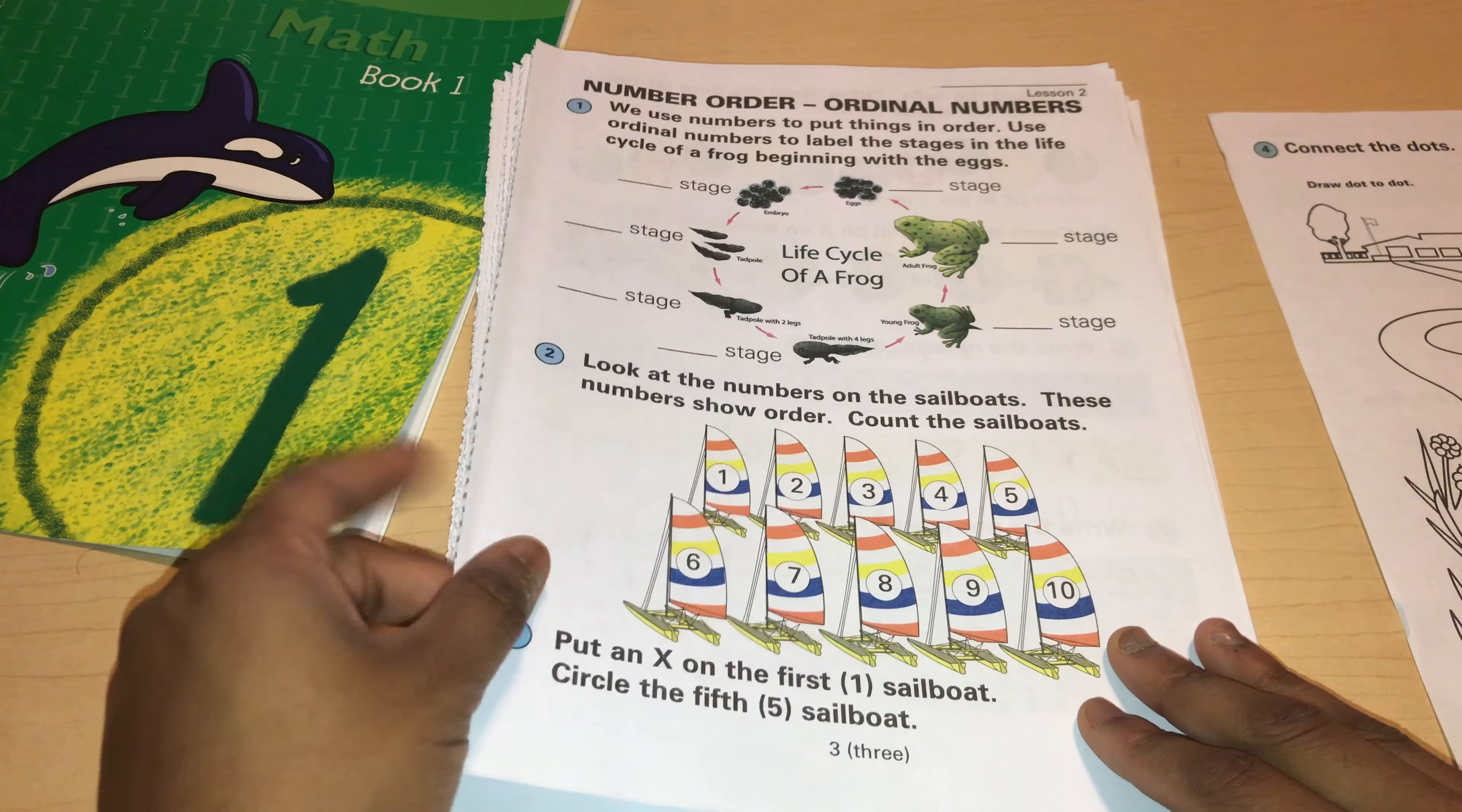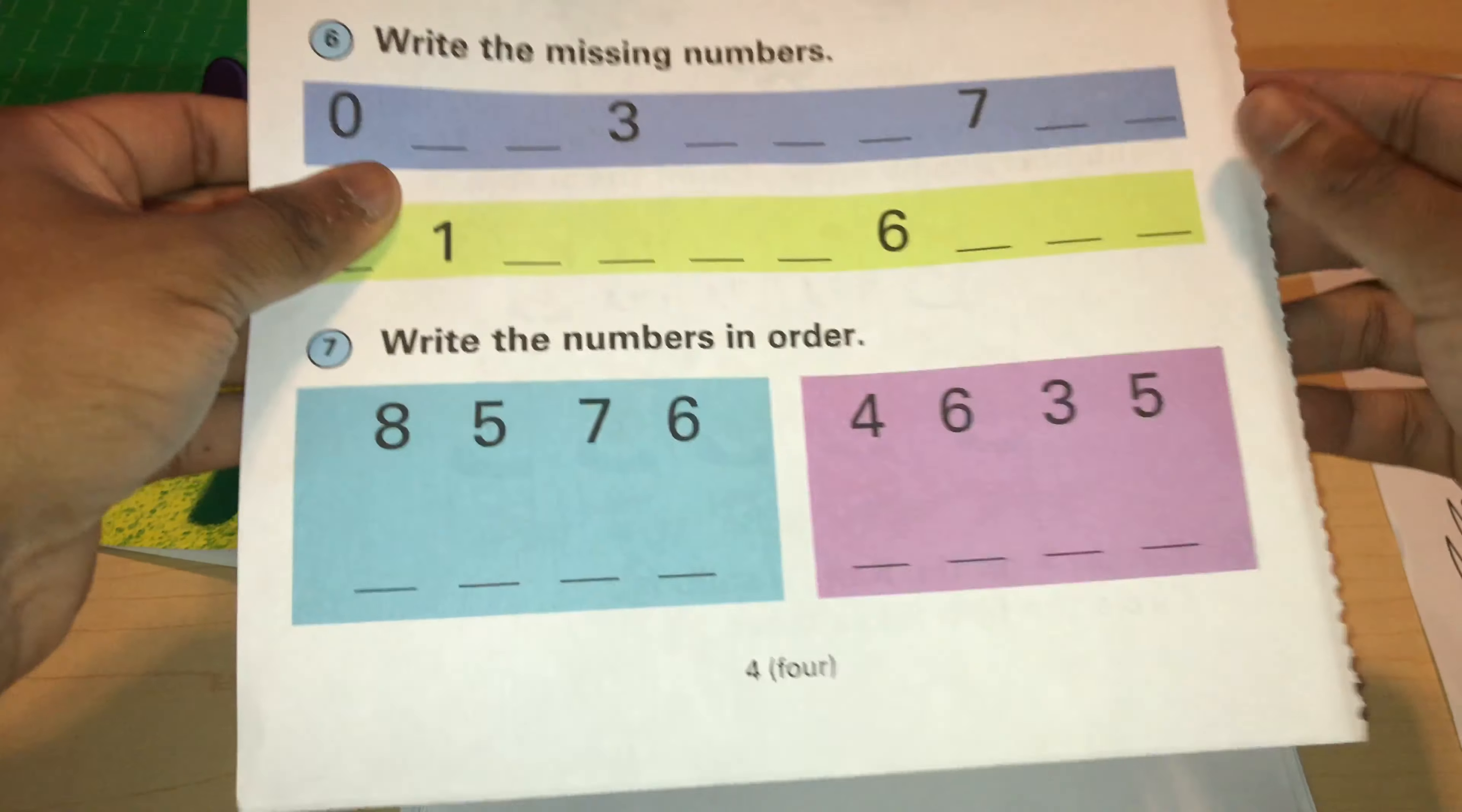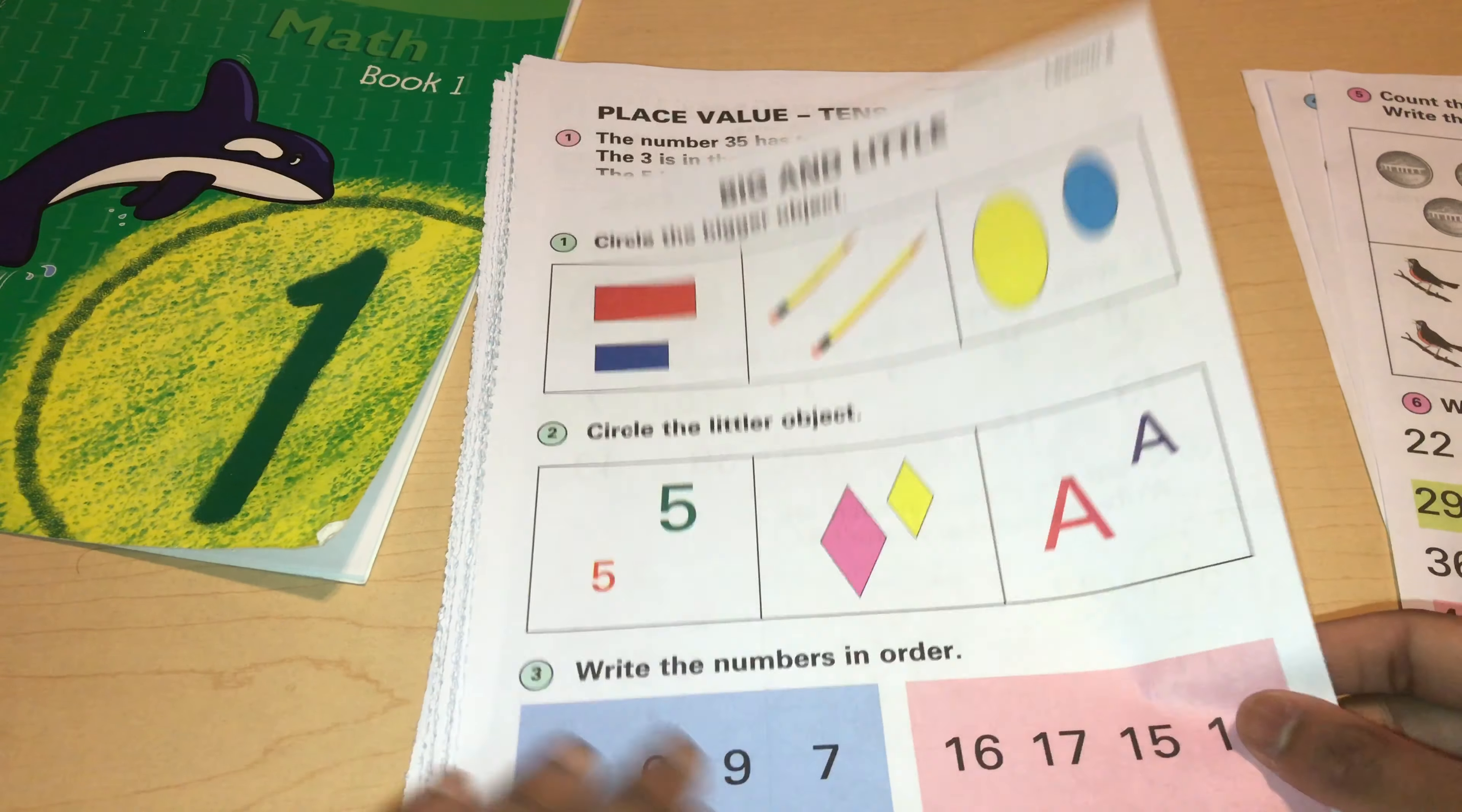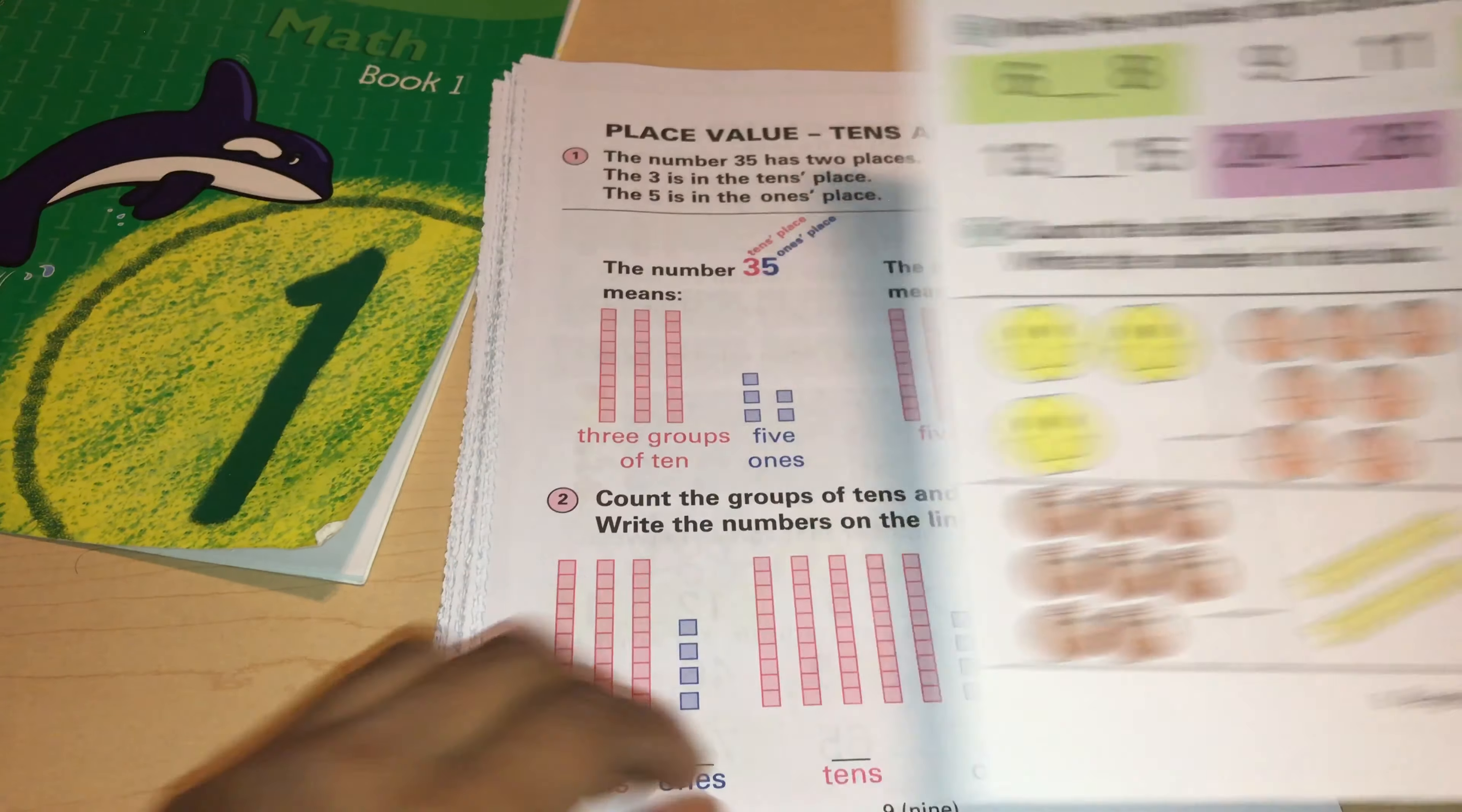And then this is lesson two. Number order. It explains what to do in each lesson. It is colorful, so if your child does like color they will really like this curriculum. If your child does not like color then you can photocopy it in black and white. But the money would look kind of weird. You see this money? This is supposed to be a nickel. And it does look like a nickel, but also Abeka has it way better. If you're just wondering. I will make a comparison video.